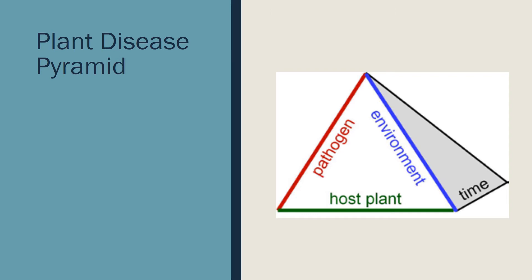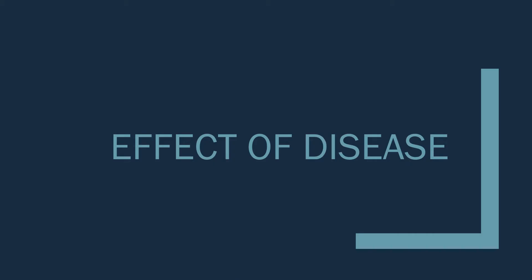Specific conditions must be present for biotic diseases to develop. There must be a susceptible host plant, the pathogen, and environmental conditions conducive to disease development — these must come together at a given point in time. These conditions make up what is called the plant disease pyramid. Biotic diseases cannot occur if one of these pieces is missing.